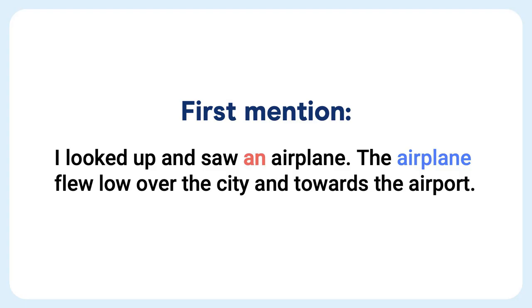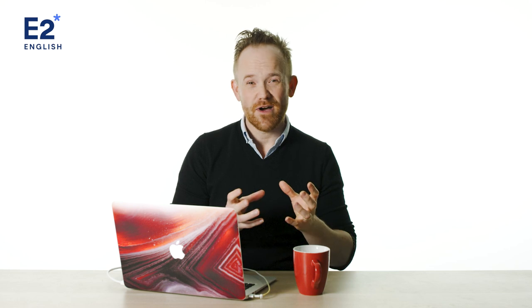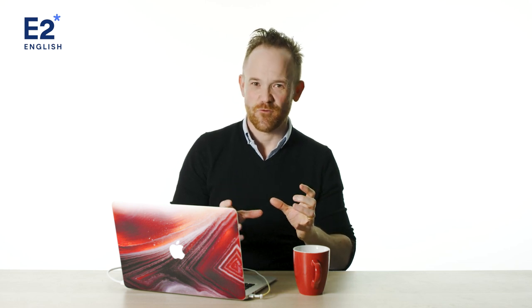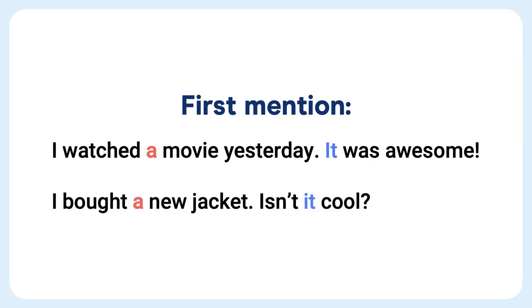First mention: 'I looked up and saw an airplane. The airplane flew low over the city and towards the airport.' The first time we mention something, we'll usually use the indefinite article — 'a' or 'an.' But to be honest, we don't usually talk like this where we formally introduce it and then say 'the airplane.' We usually just say it: 'I watched a movie yesterday. It was awesome.' 'I bought a new jacket. Isn't it cool?'